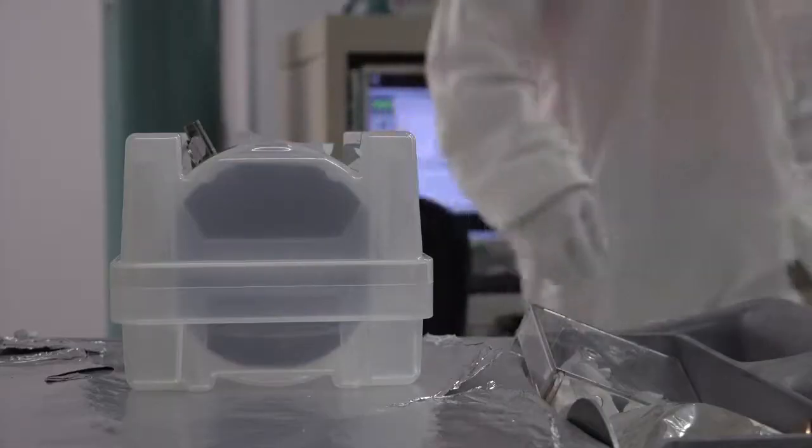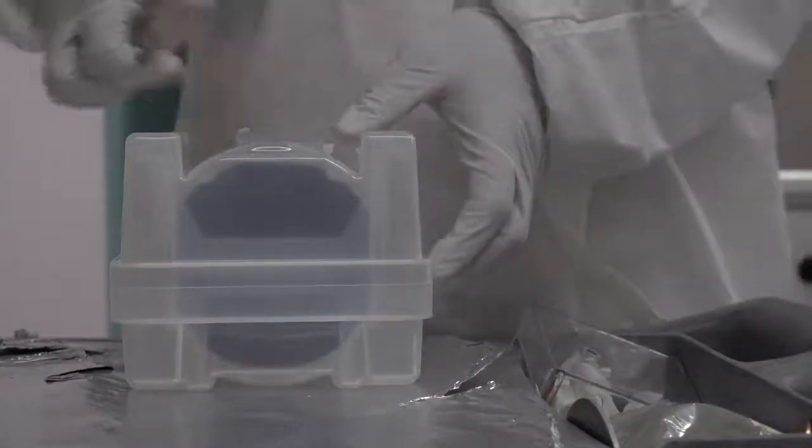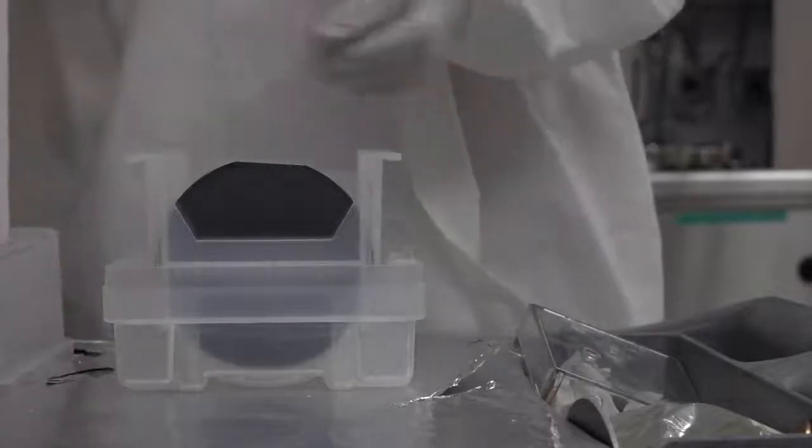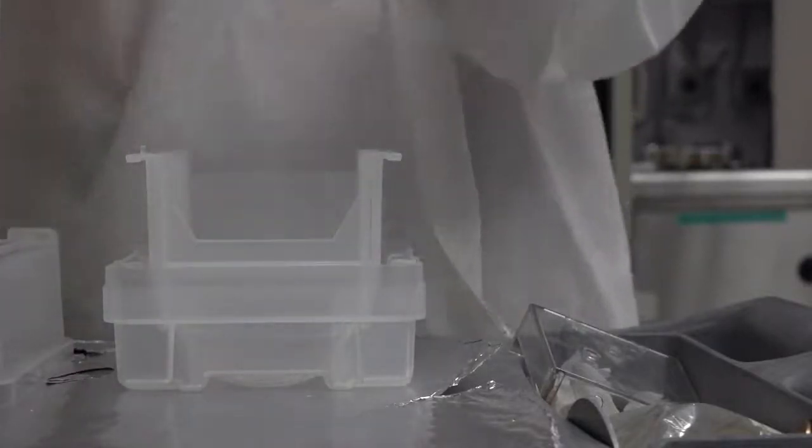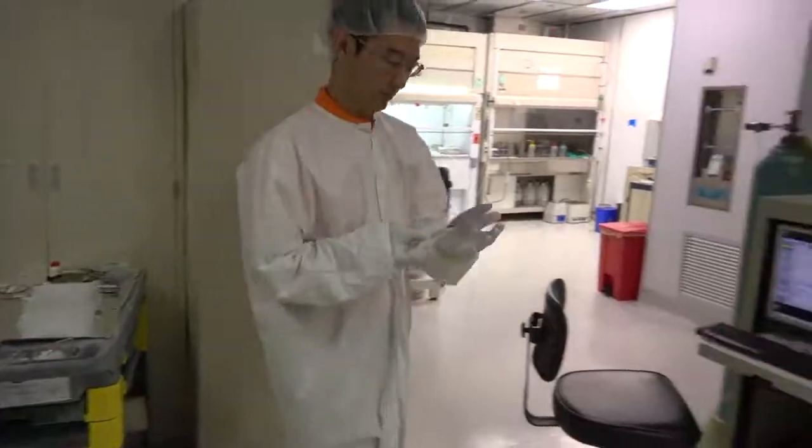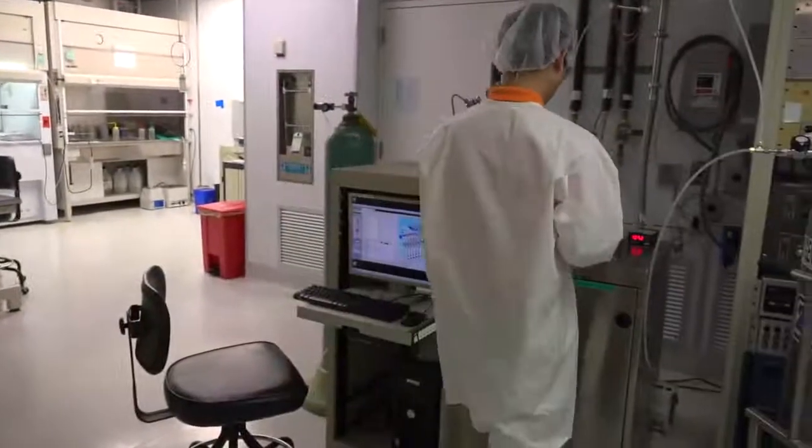We are going to use the system to deposit hafnium oxide onto a silicon wafer. This type of film is used as a gate insulator layer in modern transistors. Now that the chamber pressure reaches atmospheric pressure, we can open the chamber door.